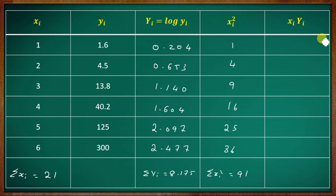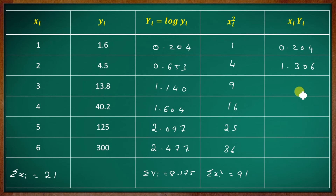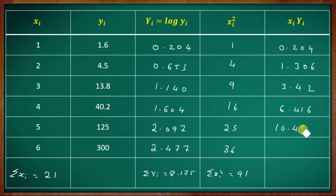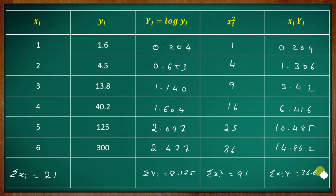Computing xi into capital Yi: 1×0.204 = 0.204, 2×0.653 = 1.306, 3×1.140 = 3.421, 4×1.604 = 6.416, 5×2.097 = 10.485, 6×2.477 = 14.862. Total summation xi·Yi = 36.693.